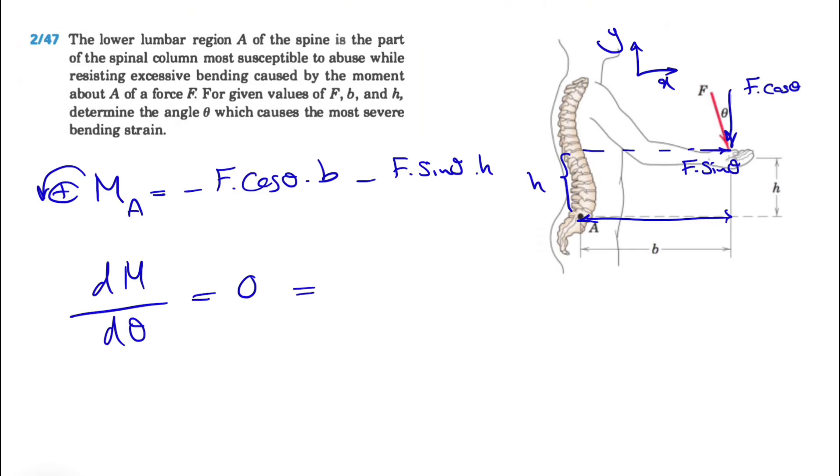We're going to start with the derivative of each of these. From the first one we have minus F cosine of theta times b, which will be basically minus F times derivative of cosine, which is minus sine of theta times b. We have the derivative of sine, which will be cosine of theta times h, equal to zero.